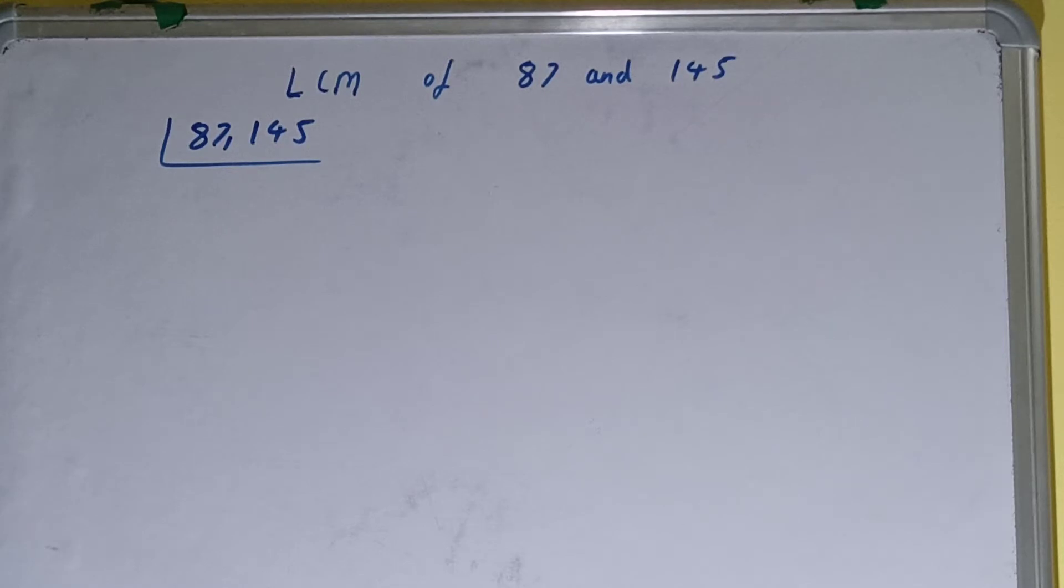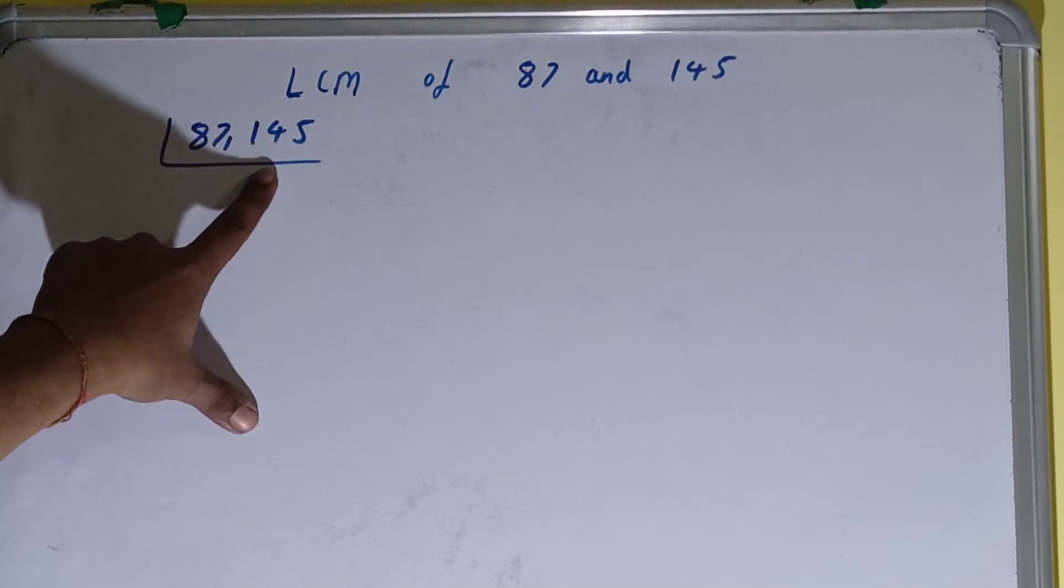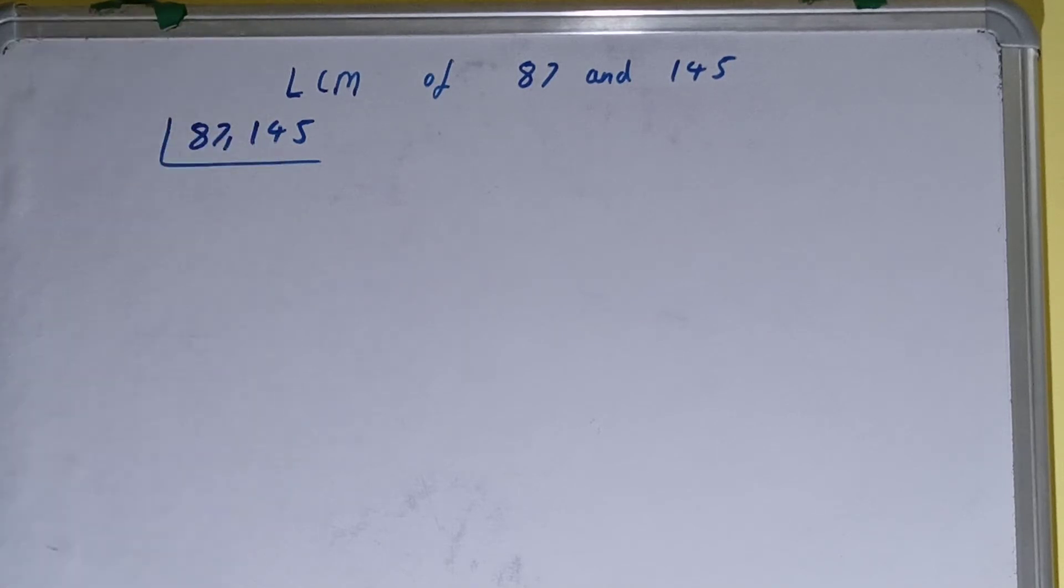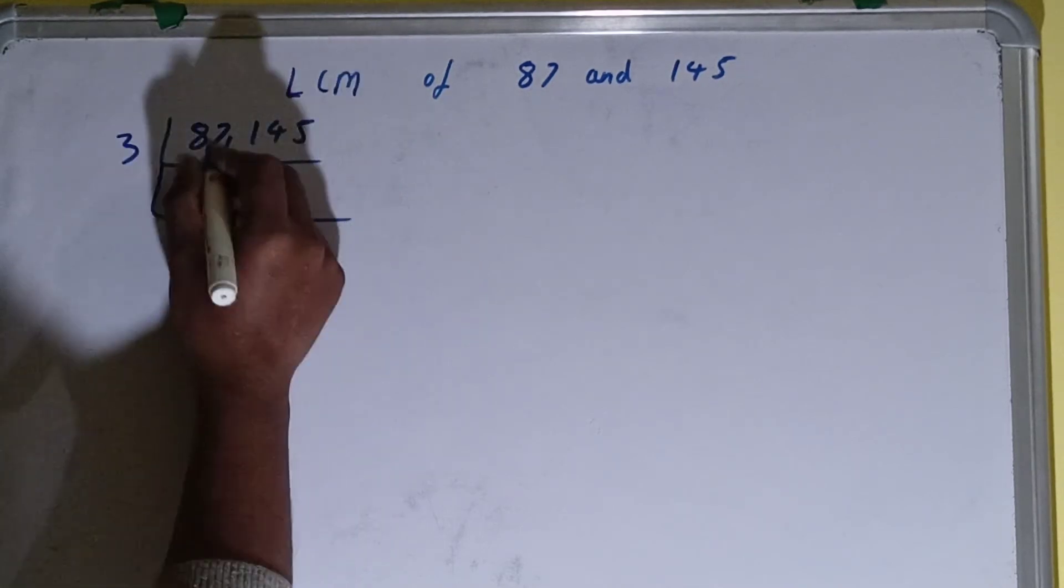That is 3, and if we check, then this number is divisible by 3 and this number is not divisible by 3. So we'll divide only the first number, and the first number on dividing will become 29.